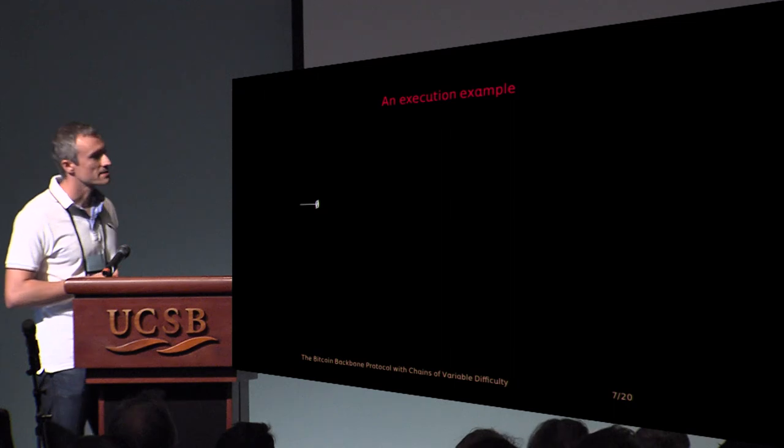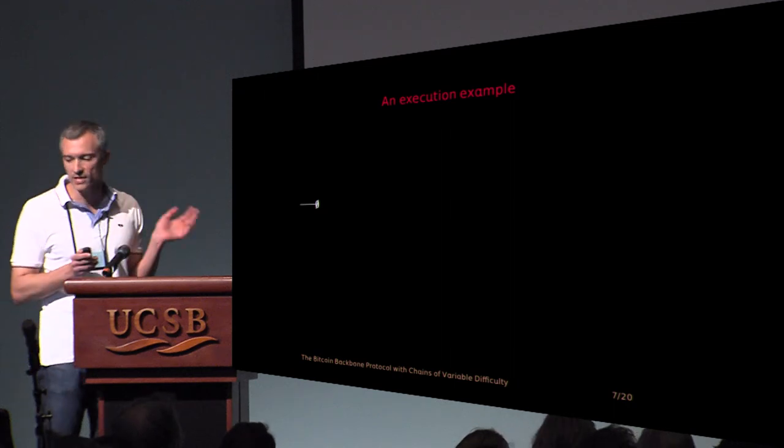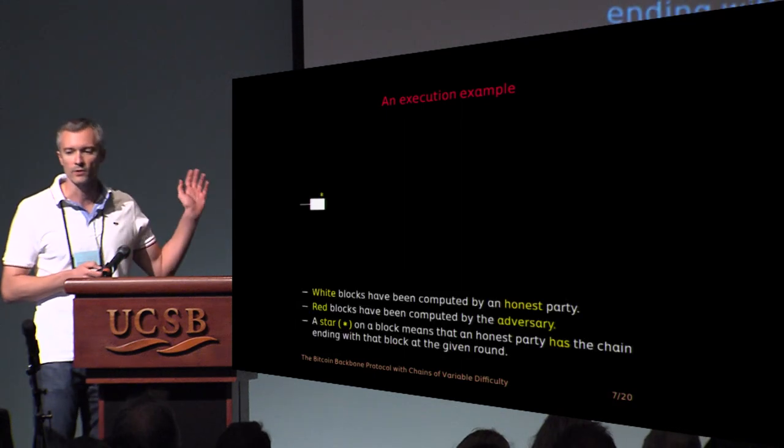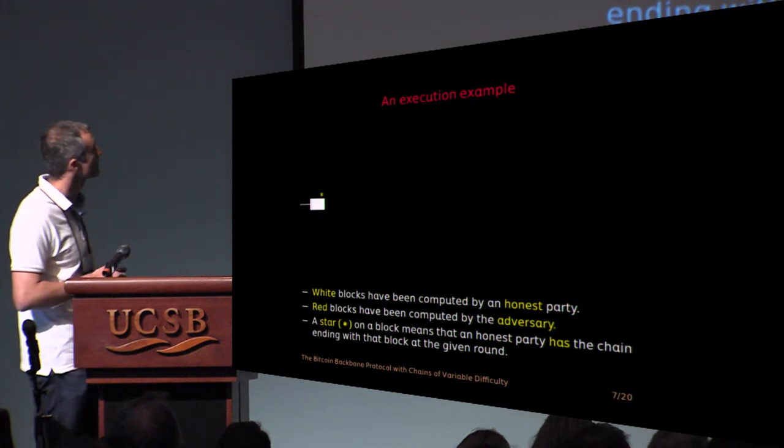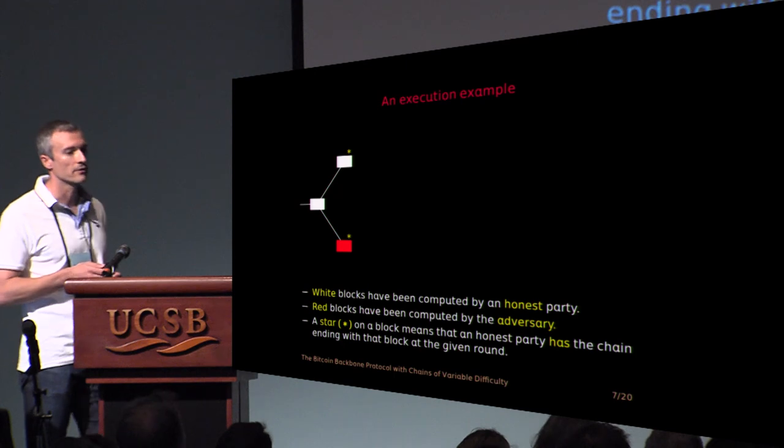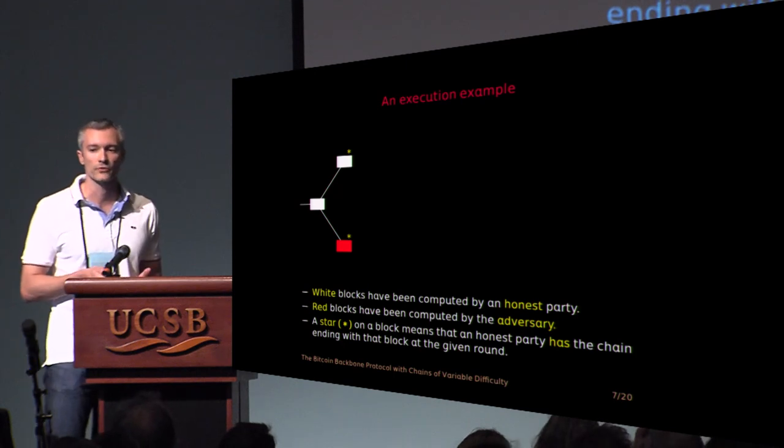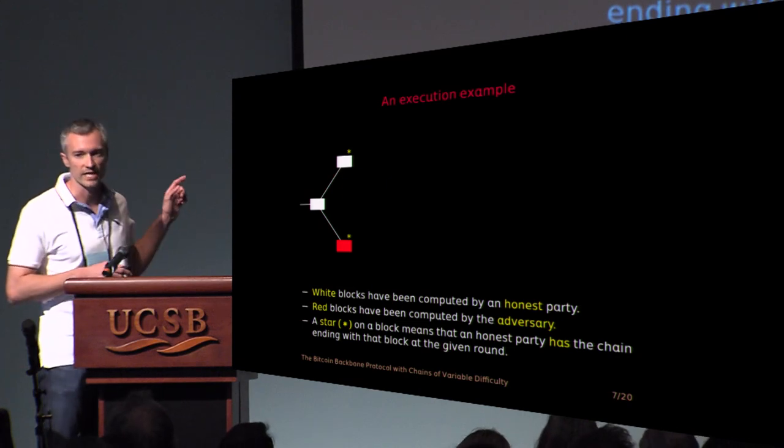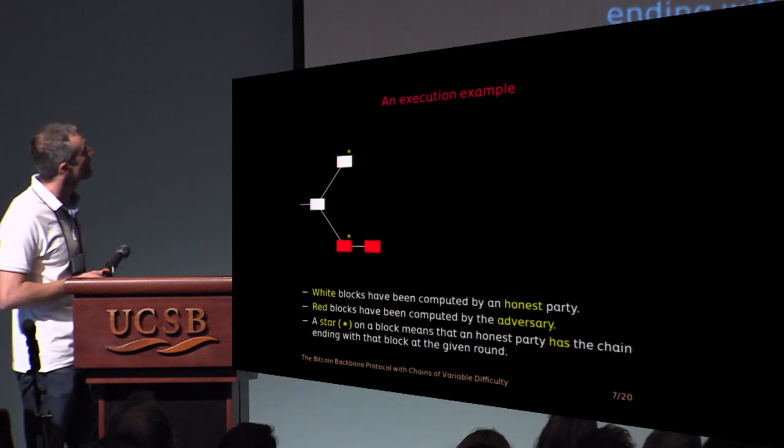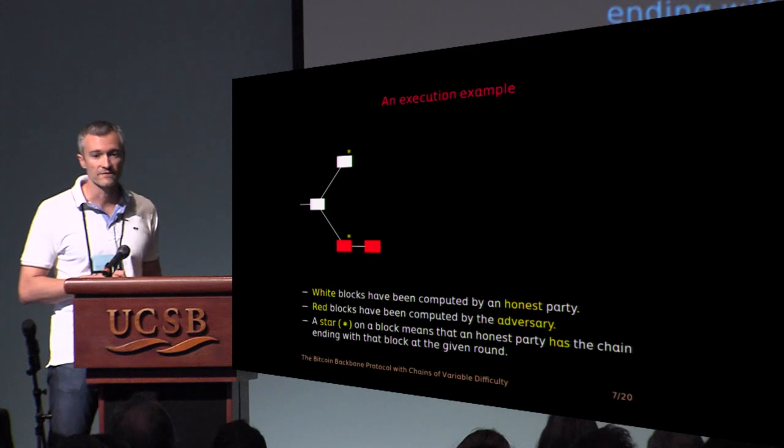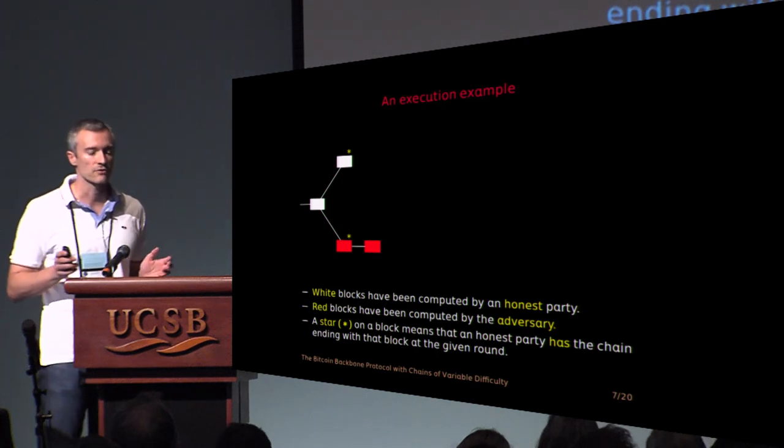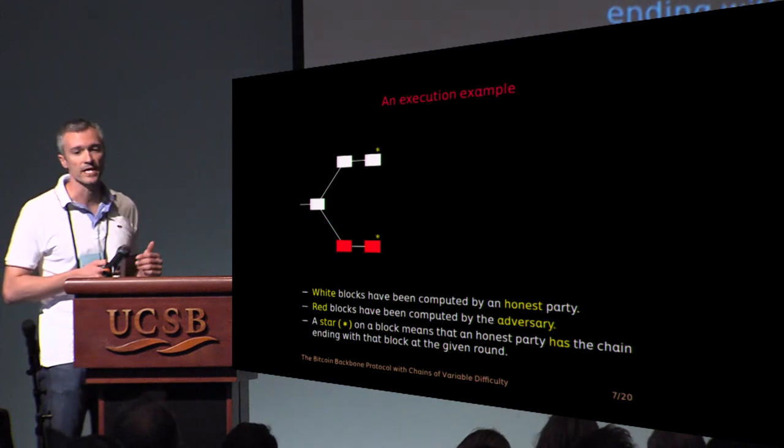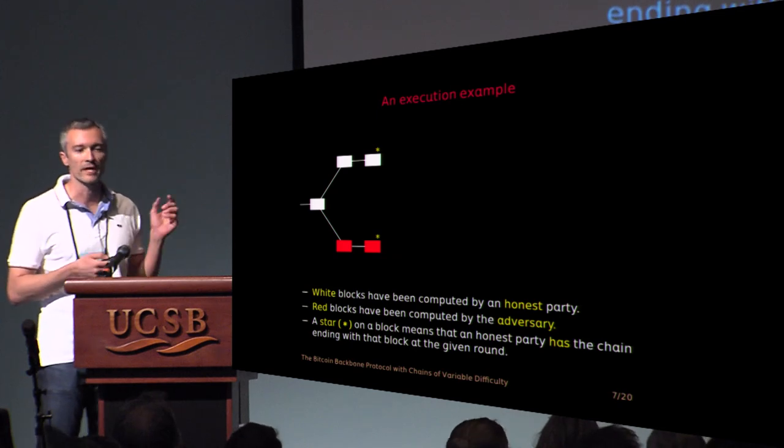So let's visualize this with an example. Initially, everybody starts with an empty chain. At a later round, an honest party might compute a block. A white block is a block computed by an honest party. Later on, maybe on a single round, both an honest party and the adversary compute a block. In this case, a fork is created. The asterisk is supposed to mean that you have honest parties on both of these chains, the upper one and the lower one. Another thing that can happen is that the adversary can compute a block and not announce it to anybody. He can keep it to himself. And then later on, when an honest party extends the upper chain, he can broadcast it at the same round and maintain the fork.